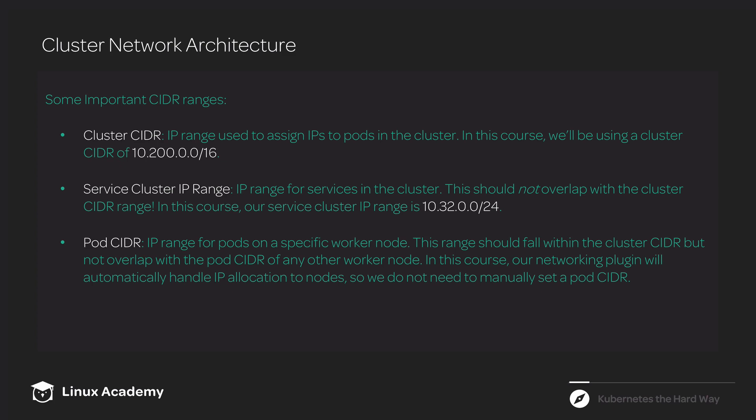Another term you might see in Kubernetes documentation is pod CIDR. We're not specifying a pod CIDR manually in this course, but I still wanted to explain it so that if you run across it, you have some understanding of what it is. The pod CIDR is an IP range for pods on a specific worker node. The cluster CIDR is the range set aside for pods across the whole cluster, while the pod CIDR is for one specific worker node — and the pod CIDR needs to fall within the cluster CIDR.